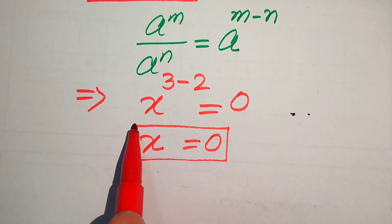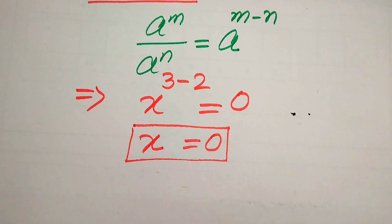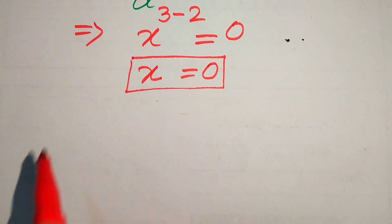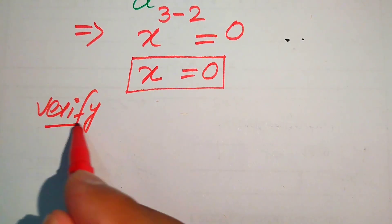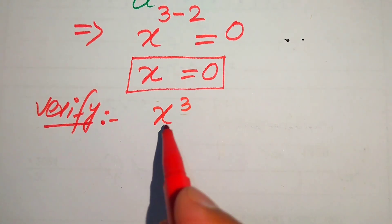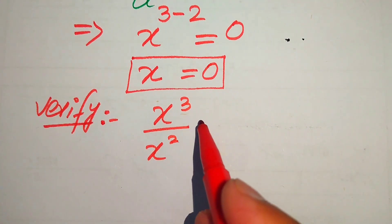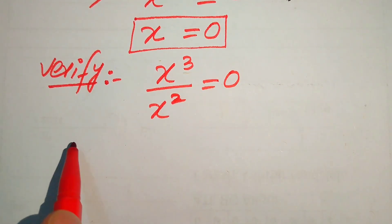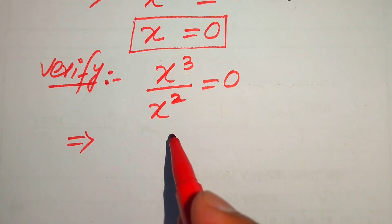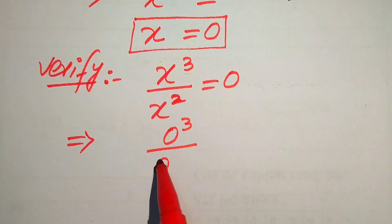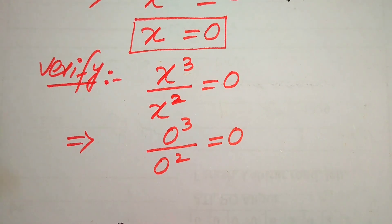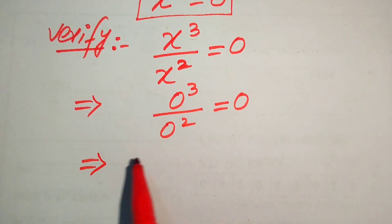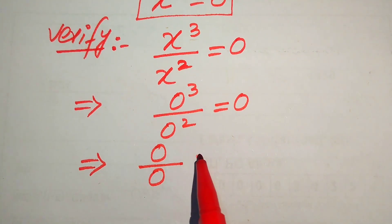So x equals 0 is the first root of the given equation from the first method. Now we check whether this root satisfies our given question statement. For verification, we copy down the given question statement: x cubed divided by x square equals 0. We substitute x equals 0 into the left-hand side and check its behavior. It becomes 0 cubed divided by 0 squared equals 0. We know that 0 cubed equals 0 and 0 squared also equals 0.